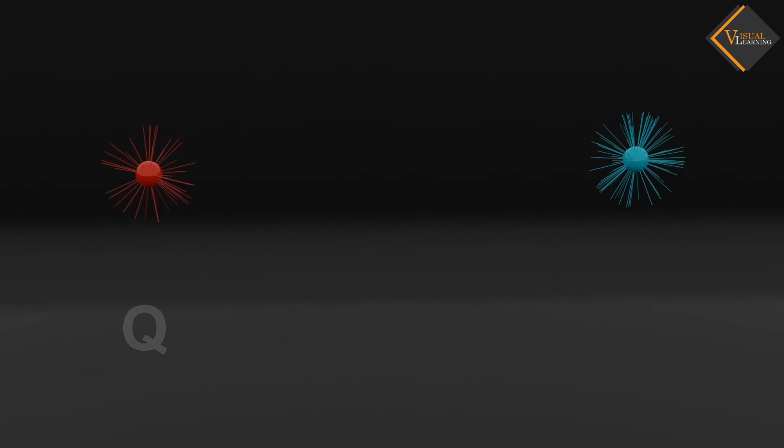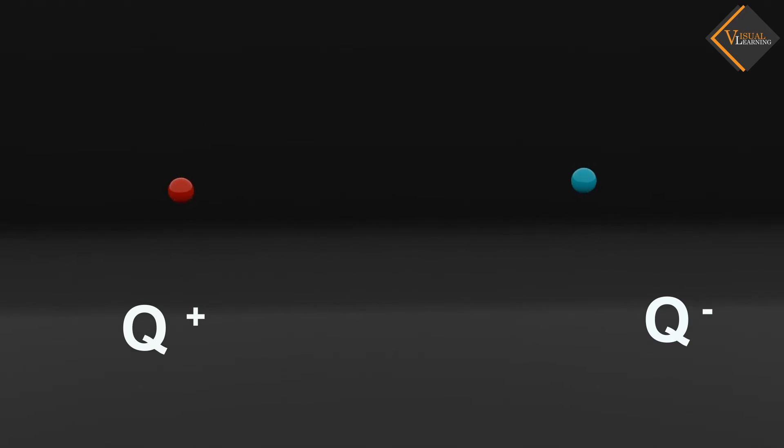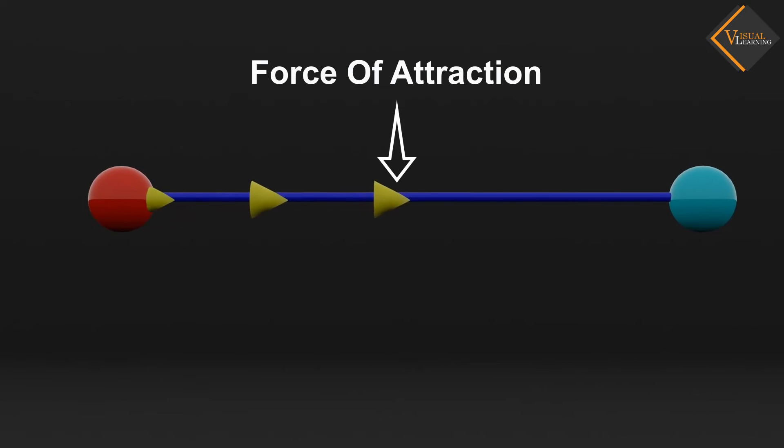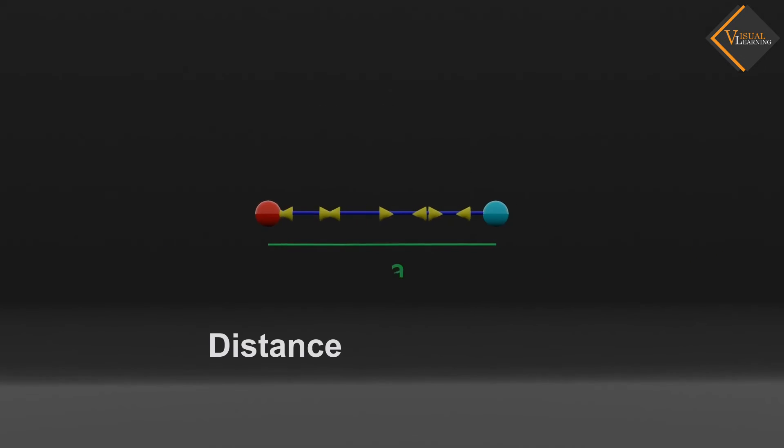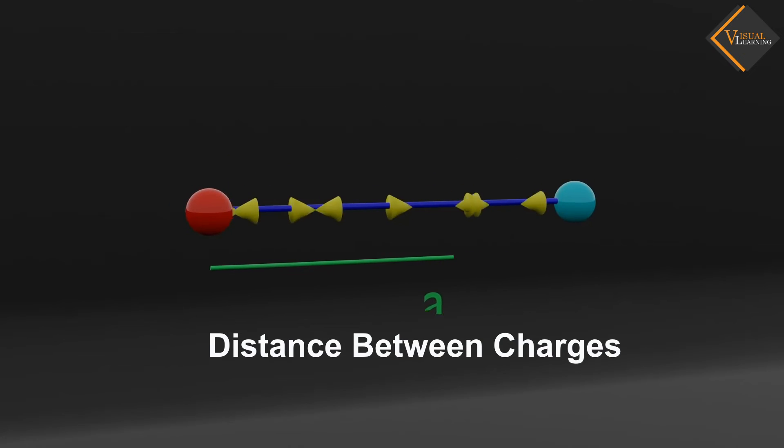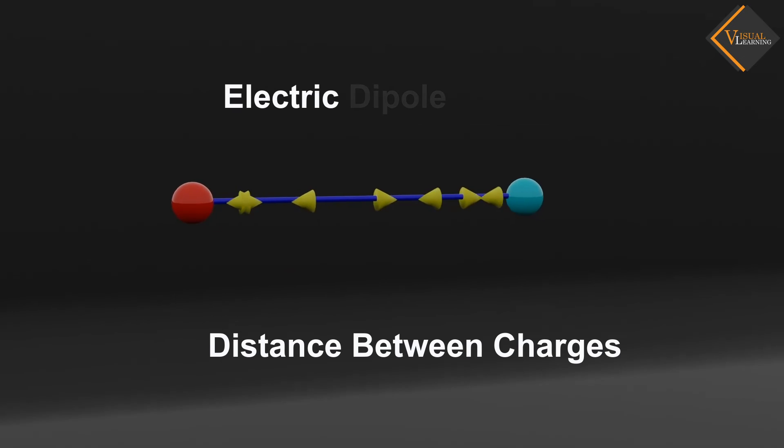An electric dipole is formed by combining two equal and opposite charges, where one is positive and the other is negative. There is a force of attraction between these charges when they are separated by a distance. The combination of charges in this manner is called an electric dipole.